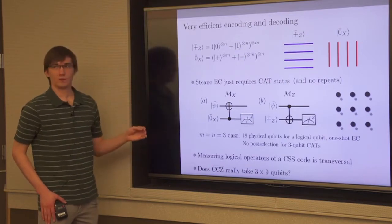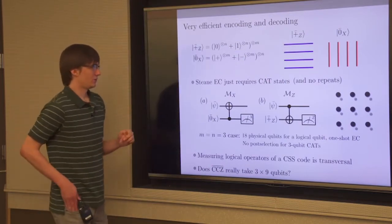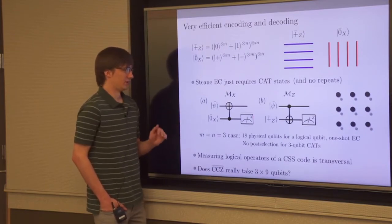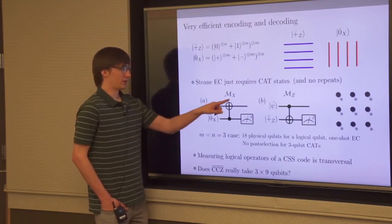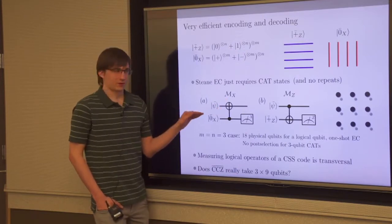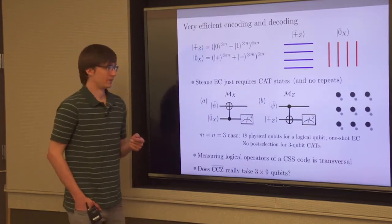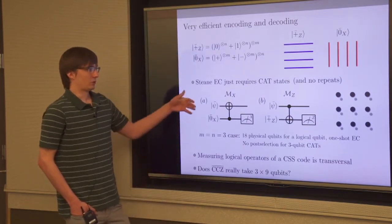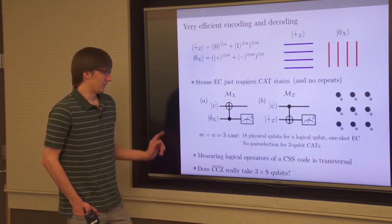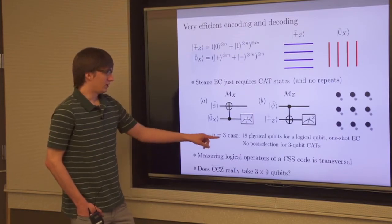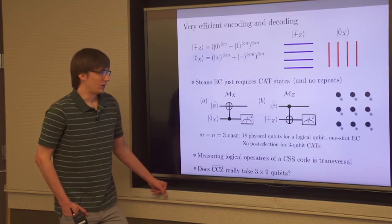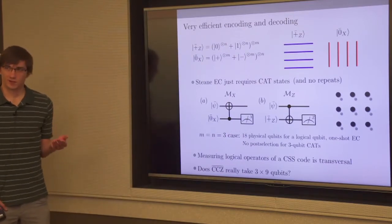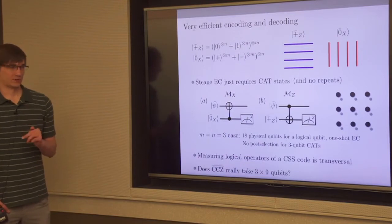These cat states are important because they're the ones you can use for error correction. You can do Steane error correction using just these cat states. Figure A measures all the X gauge operators and figure B measures all the Z gauge operators, all at once in just one shot — you don't have to repeat because of measurement errors. In the smallest case where m and n are both three, you can get away without even verifying the cat states, because three-qubit cat states prepared with faulty gates will have at most one error on the output.